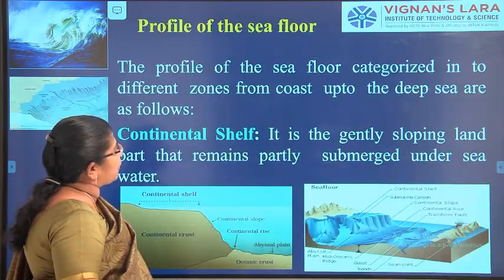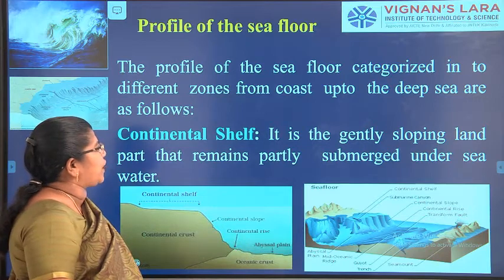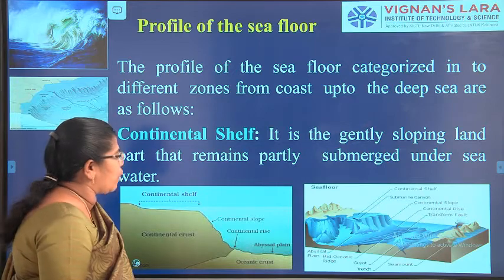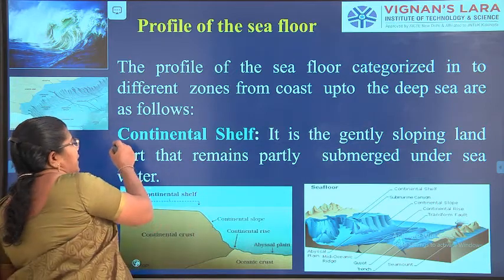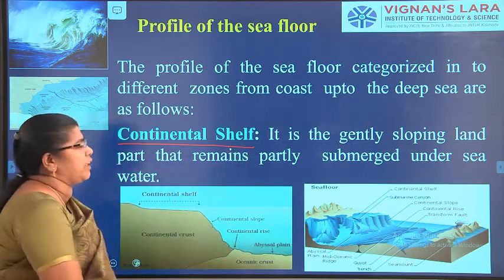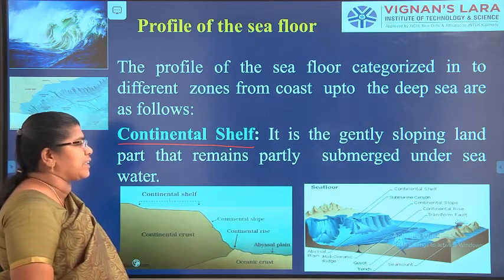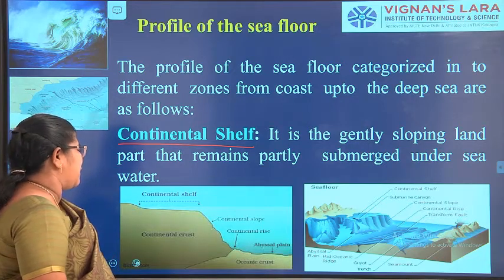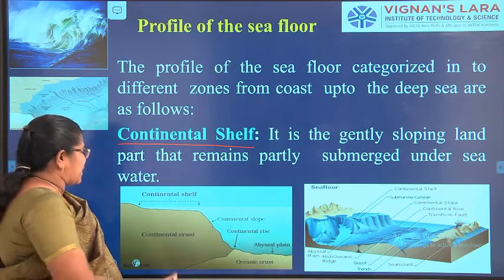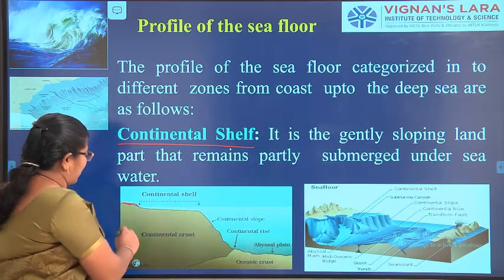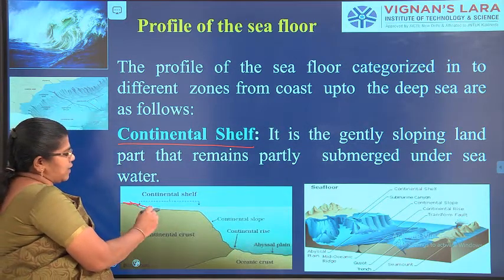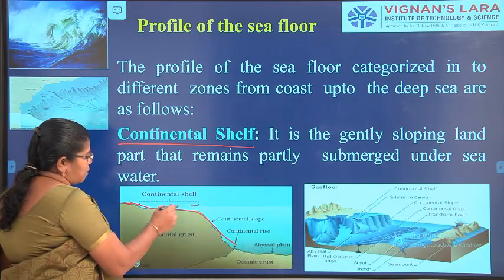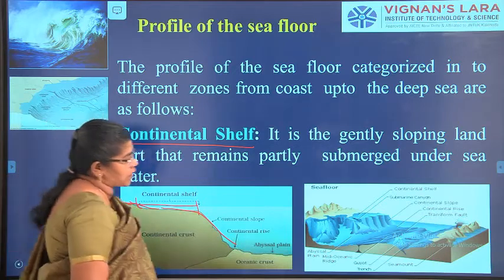The next topic is the profile of the sea floor, which is categorized into different zones. The first zone is the continental shelf. This is a gentle sloping land part that remains partly submerged under sea water. You can see here — this is the shore, this is the sea, going like this and then coming to the ocean. This part we call the continental shelf.